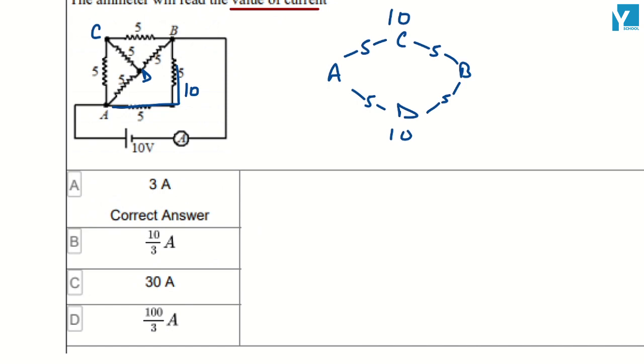This is 10 and 10, so the whole section is 5. This whole resistance is 5.